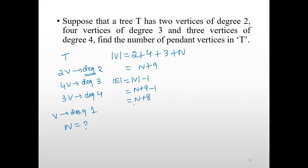The value of n can be found by using the handshaking property. The handshaking property states that the sum of the degrees of all the vertices is equal to twice the number of edges.